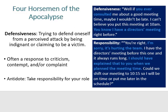The main antidote to defensiveness is to take responsibility for your role in the situation, even if it's just for part of the issue. Doing so prevents escalation, and from there people can work toward a compromise. An example of taking responsibility: 'You're right. I'm sorry it's hurting the team. I have the director's meeting before this one and it always runs long. I should have explained that to you when we planned the meeting time. Can we shift our meeting to 10:15 so I will be on time, or could you put me later in the schedule?' It's not shifting blame — it is offering an explanation while still taking responsibility, and the best part is it proposes a solution, making it easy for your boss or co-workers to move on.